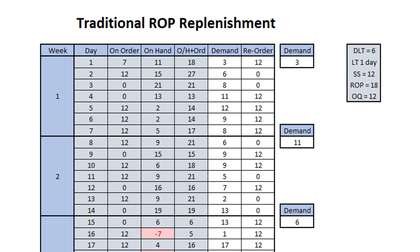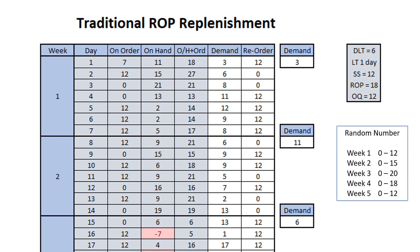Here is the spreadsheet for the reorder point, which we will look at in more detail just now. We will be running the simulation over 5 weeks, or 35 days, and to make things more interesting, I will be using a random number generator to determine the demand each day. The demand will increase slightly from 0 to 12 in the first week, up to 0 to 20 in week 3, and then back to 0 to 12 in week 5.